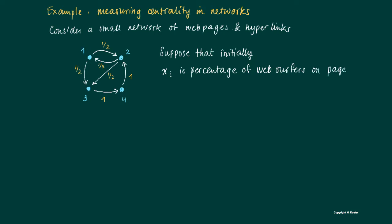What is a distribution vector? Well, it's the vector X keeping track of the percentages of people on the different web pages, so it's X_1, X_2, X_3, X_4.